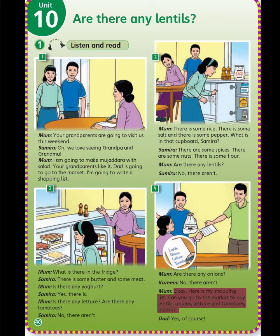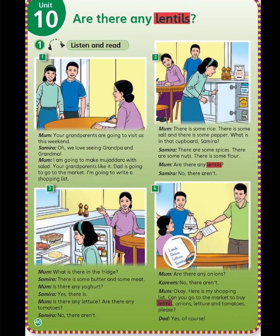Four. Mom: Are there any onions? Kareem: No, there aren't. Mom: Okay, here is my shopping list. Can you go to the market to buy lentils, onions, lettuce, and tomatoes please? Dad: Yes, of course.